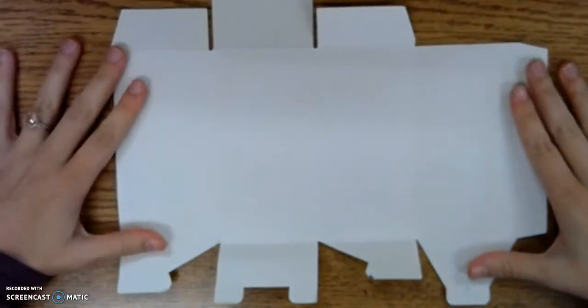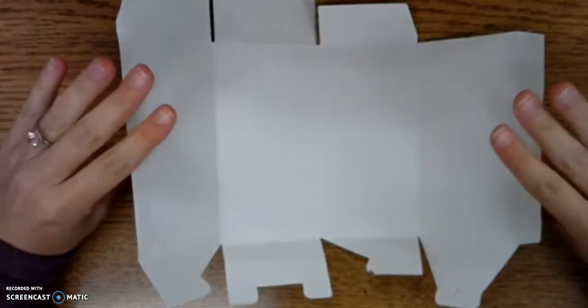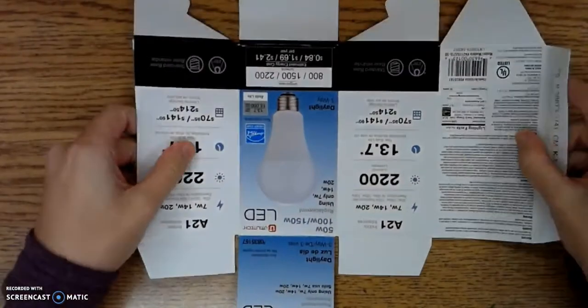So, now you have a funky looking piece that looks kind of like this. Hopefully, it will adjust in just a second. There we go. And now you're going to simply turn it inside out.